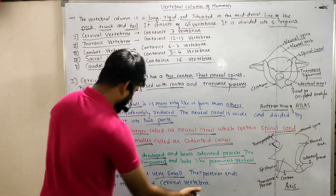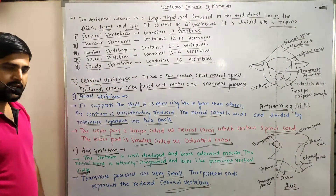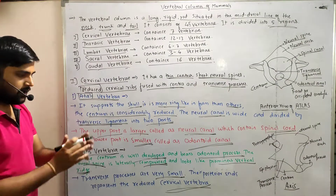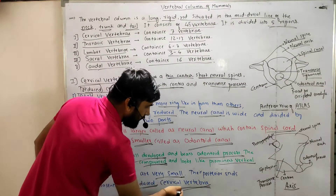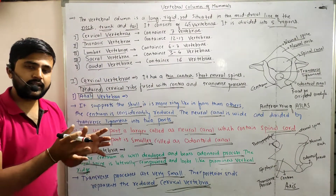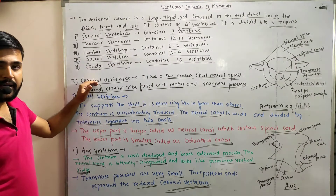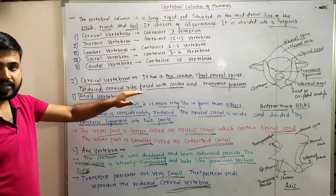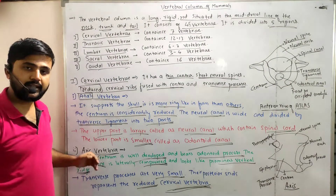The posterior ends of the axis vertebra represent reduced cervical ribs. So in summary, the first cervical vertebra is the atlas and the second cervical vertebra is the axis.